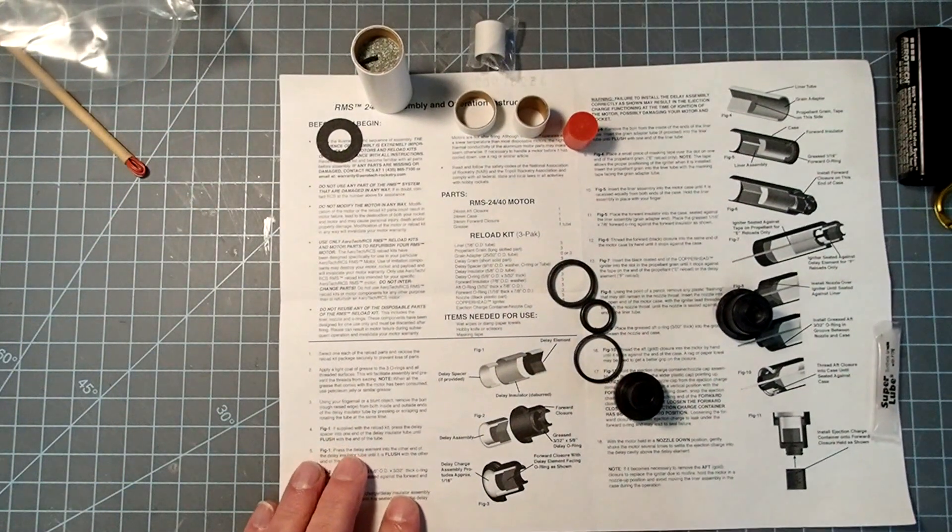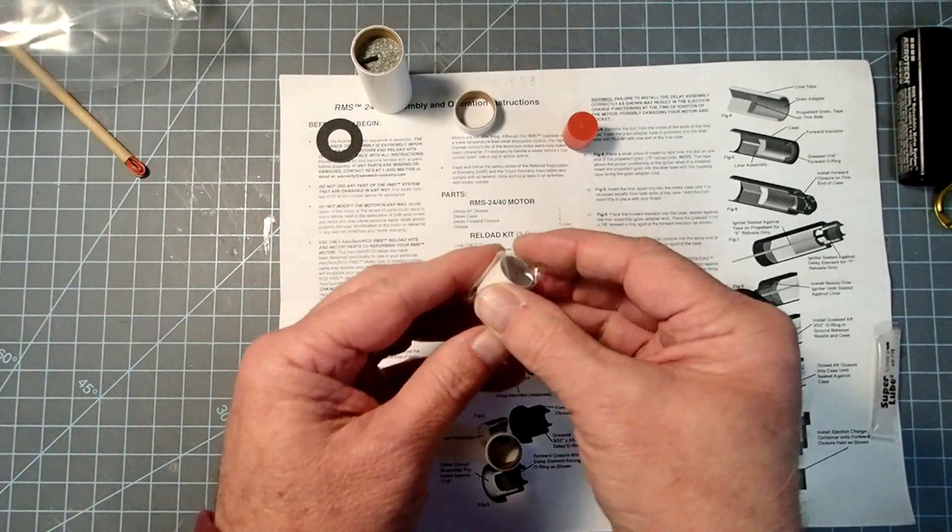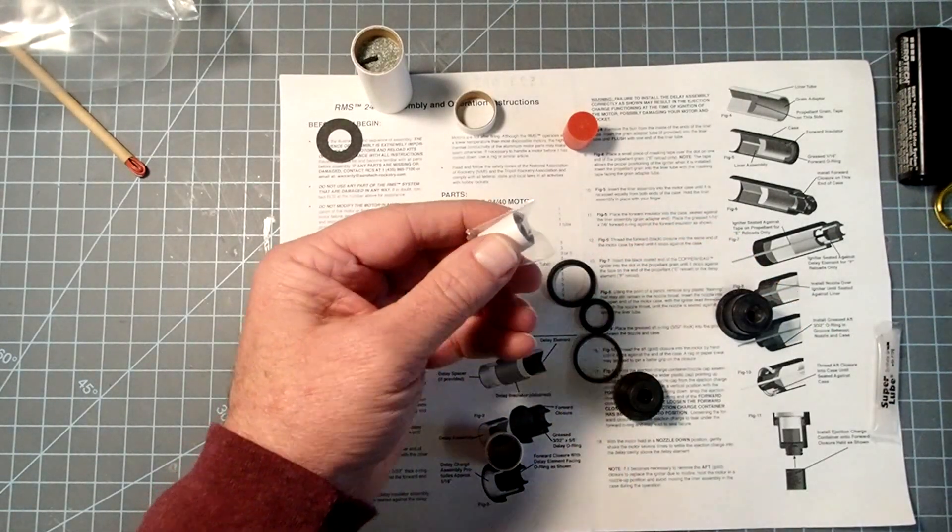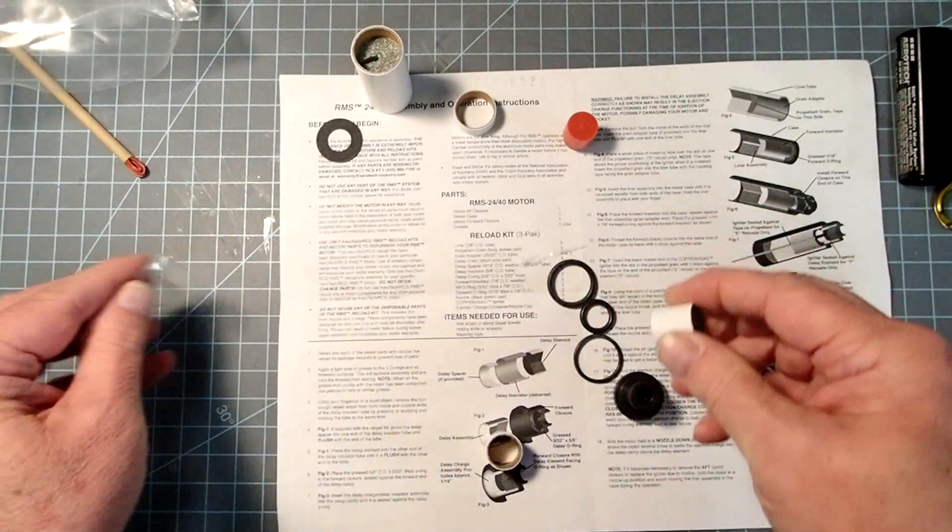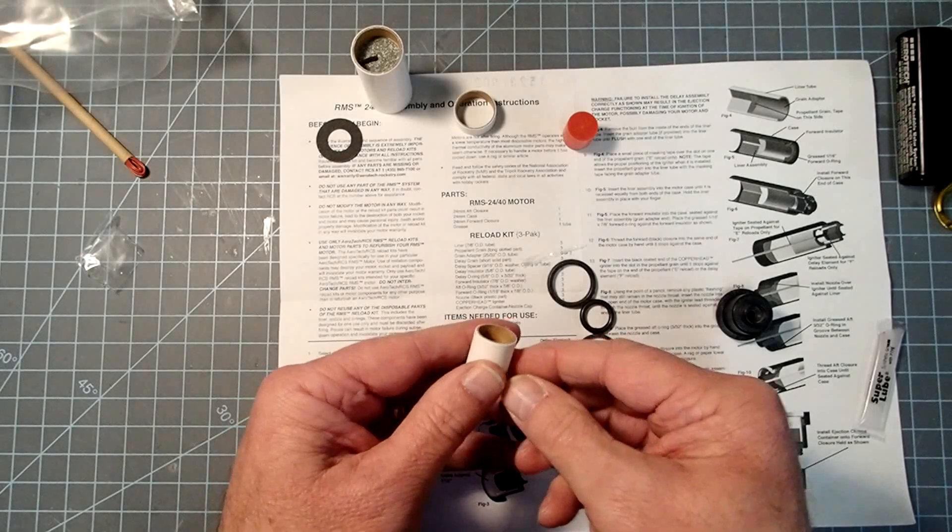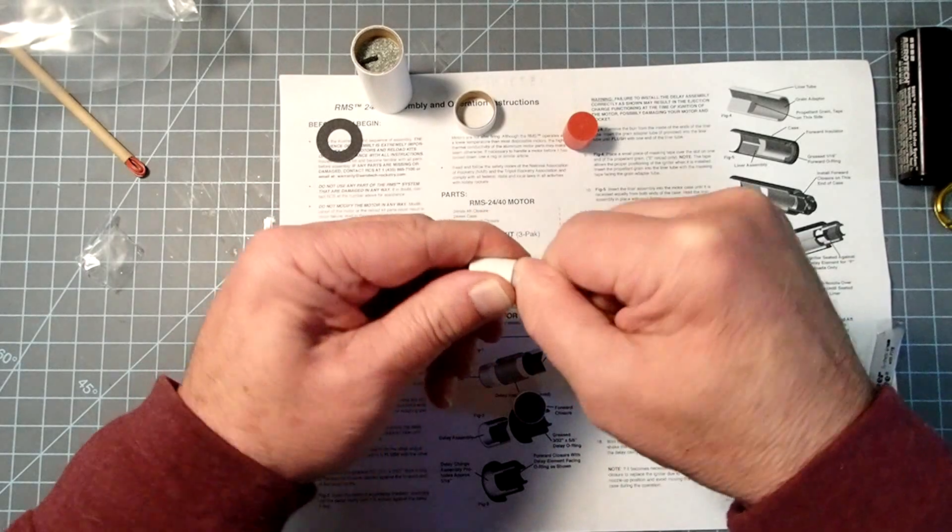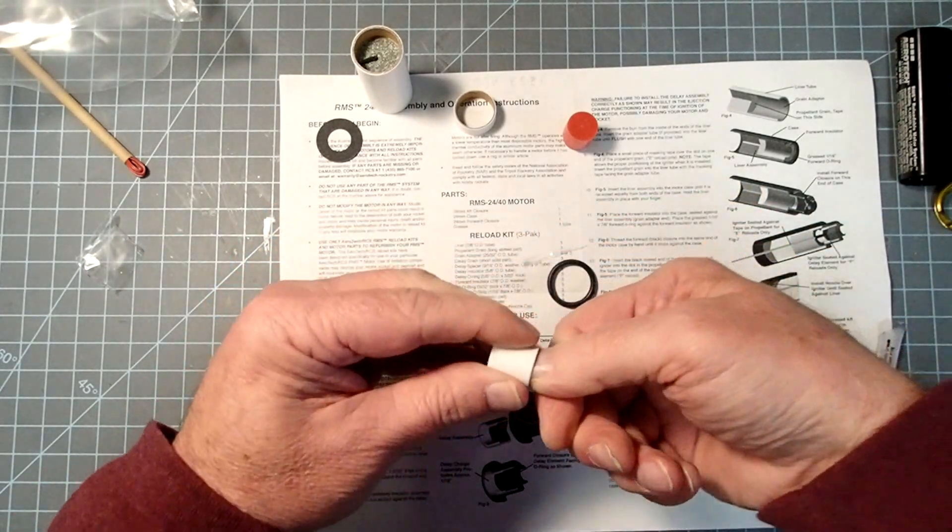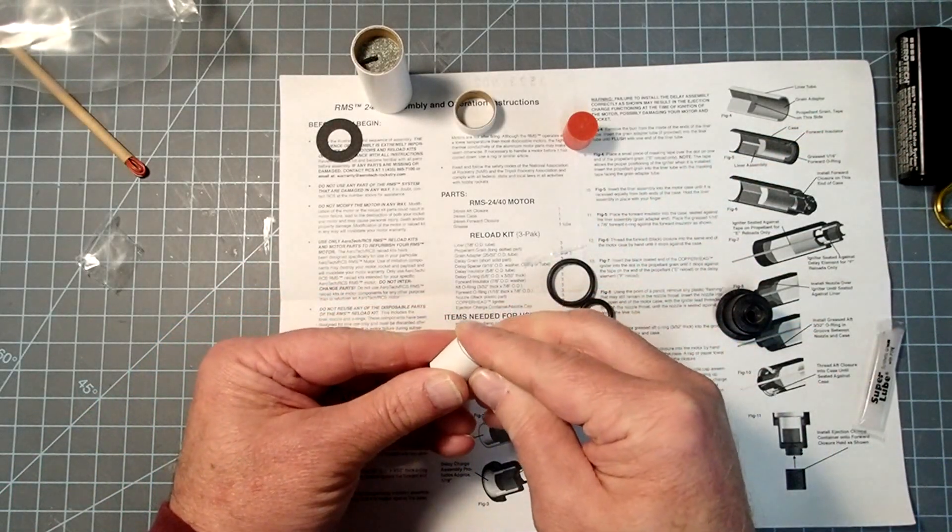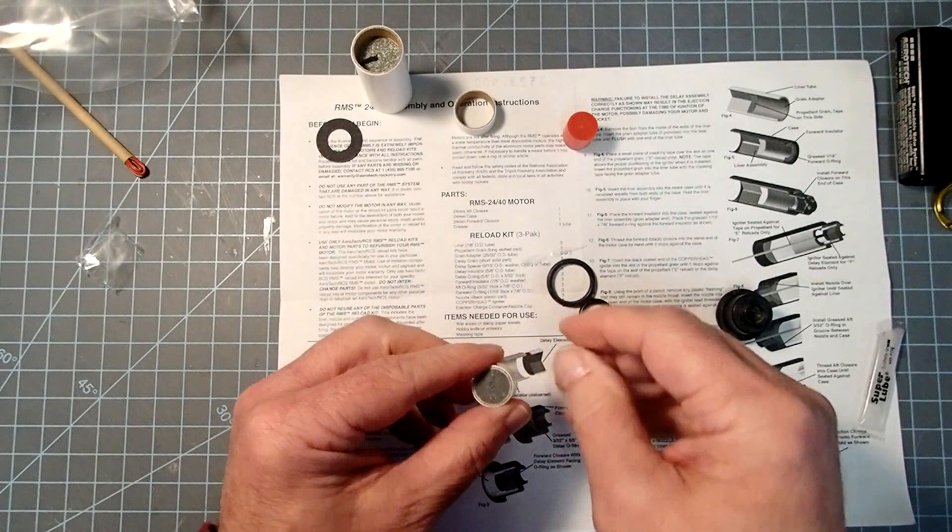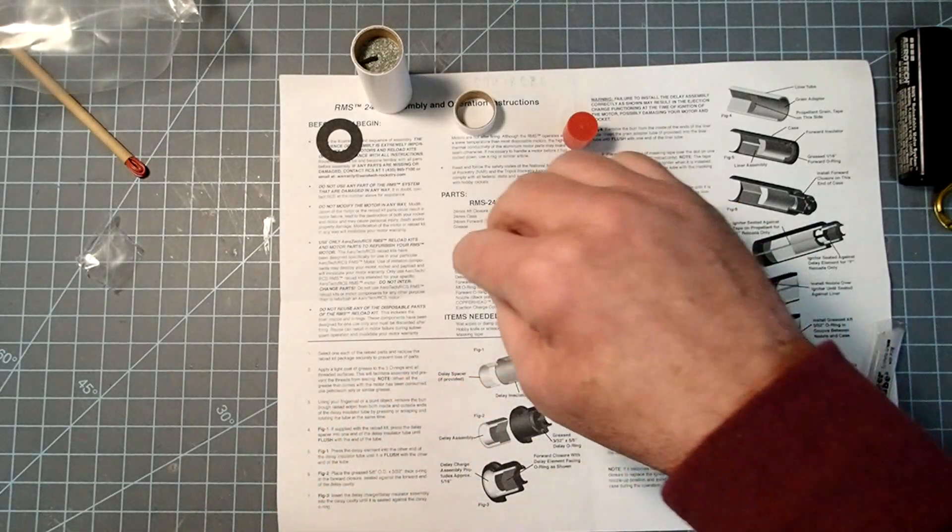The first thing we're going to do is take the delay insulator, that's this part here, and our delay grain, and we're going to install the delay grain into that insulator. A lot of times it has little specks or ridges in here, and so you can take your thumbnail, just kind of chamfer those around there and deburr it. That'll help this go in easier. That should go in like this. In some cases there may be a spacer. For this kit there is not. It already fits flush there.